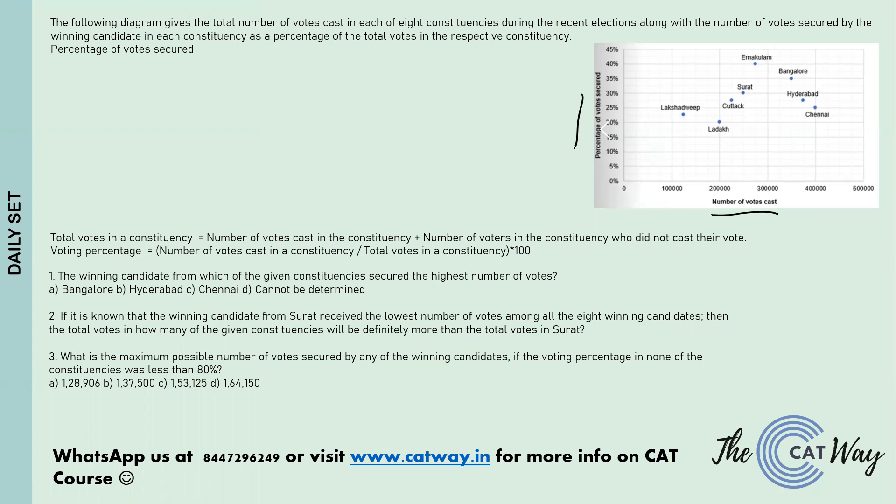We have also been given two formulas: total votes in the constituency equals the number of votes cast plus the number of voters who did not cast their vote. The voting percentage is given by number of votes cast in a constituency divided by total votes in the constituency, multiplied by 100.